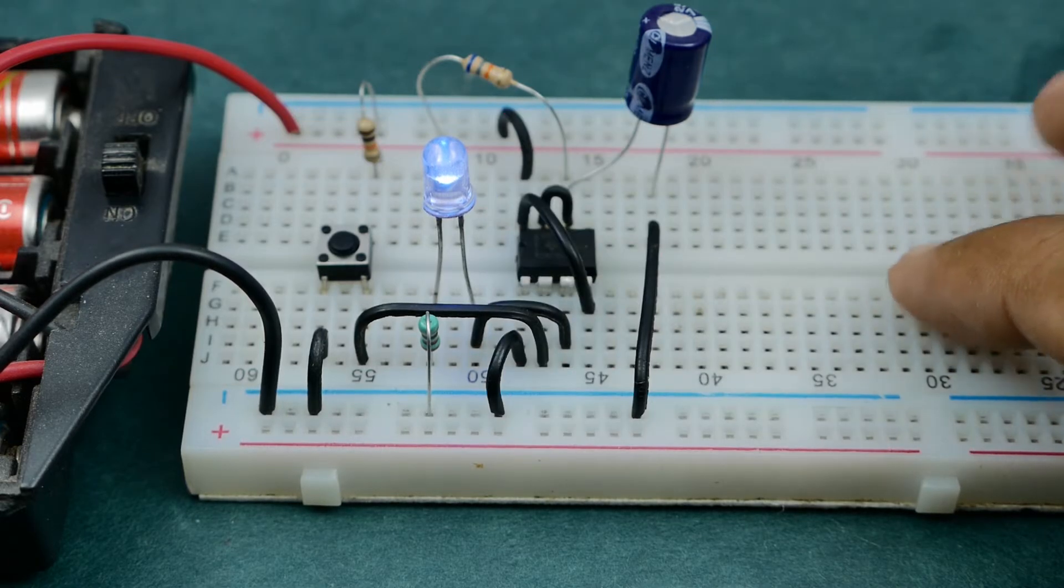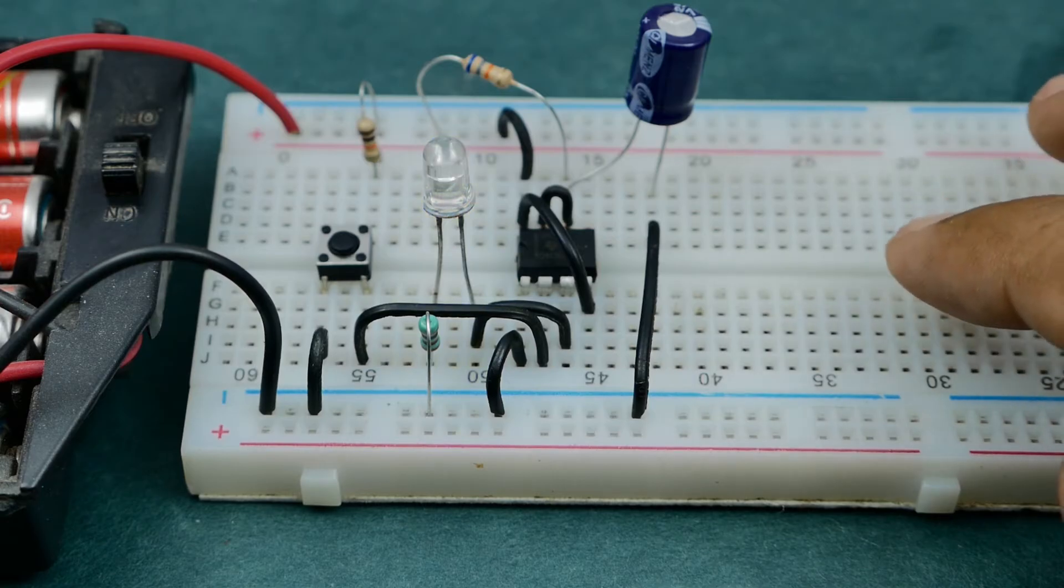30 seconds are almost getting elapsed and so the output should turn off in 3, 2, 1 and this is it.